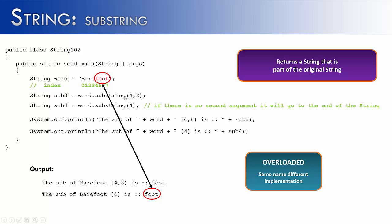And when you have a method that has two implementations, which we do here, one with two parameters and one with one parameter, we call it overloaded. It has the same name, but it is implemented differently. This one has a starting and ending index. This one assumes that the ending index is the end of the string.